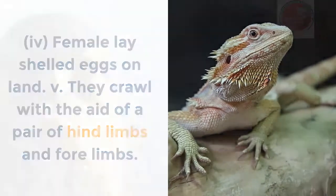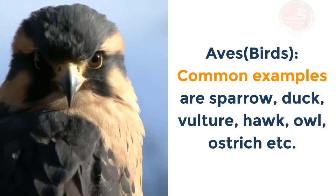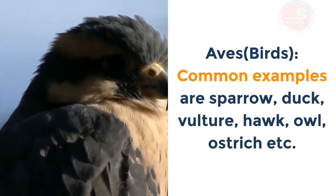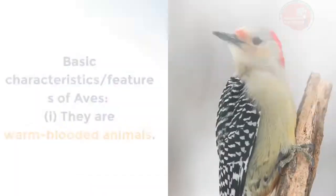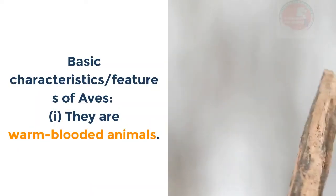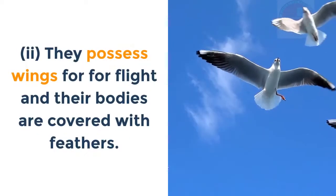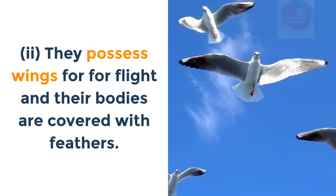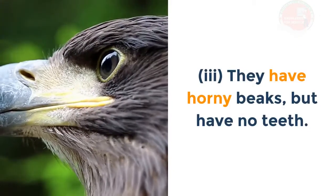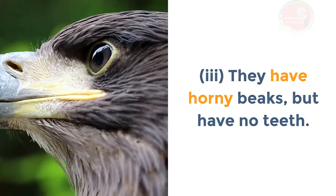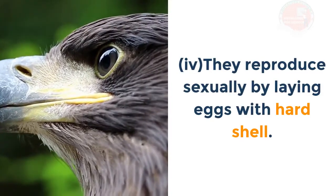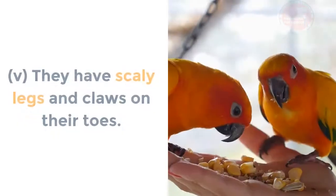Class Aves (birds): common examples include sparrow, duck, vulture, hawk, owl, ostrich, etc. Basic characteristics: i. They are warm-blooded animals. ii. They possess wings for flight and their bodies are covered with feathers. iii. They have horny beaks but no teeth. iv. They reproduce sexually by laying eggs with hard shells. v. They have scaly legs and claws on their toes.